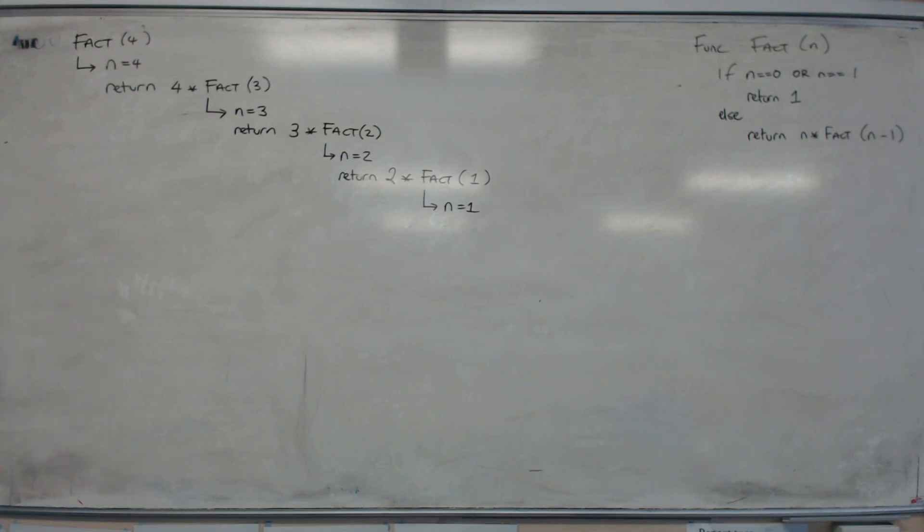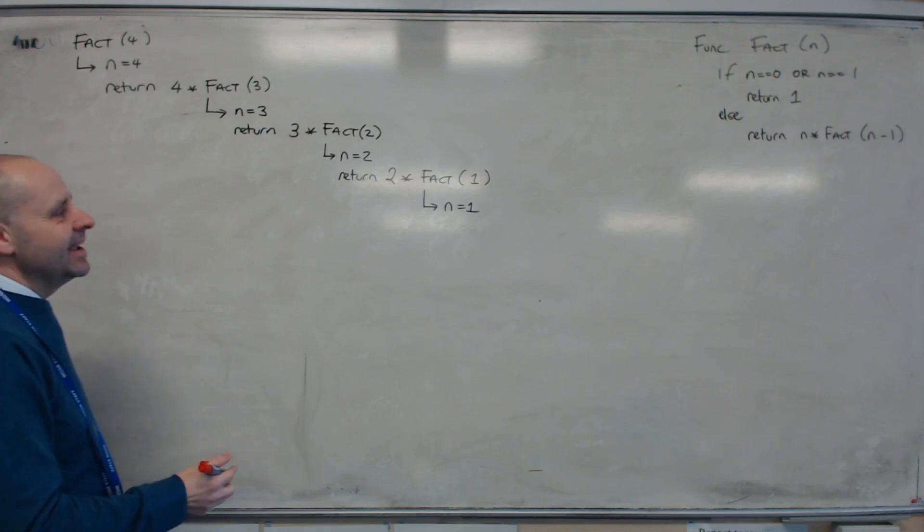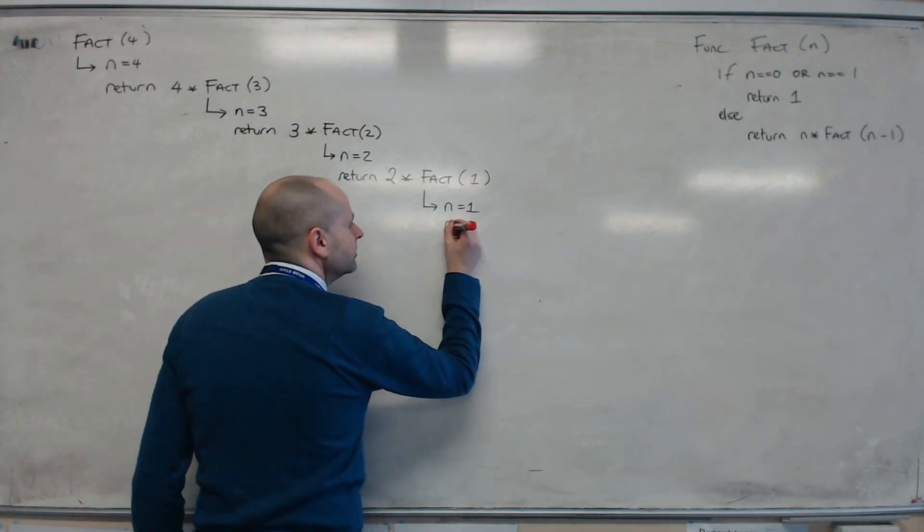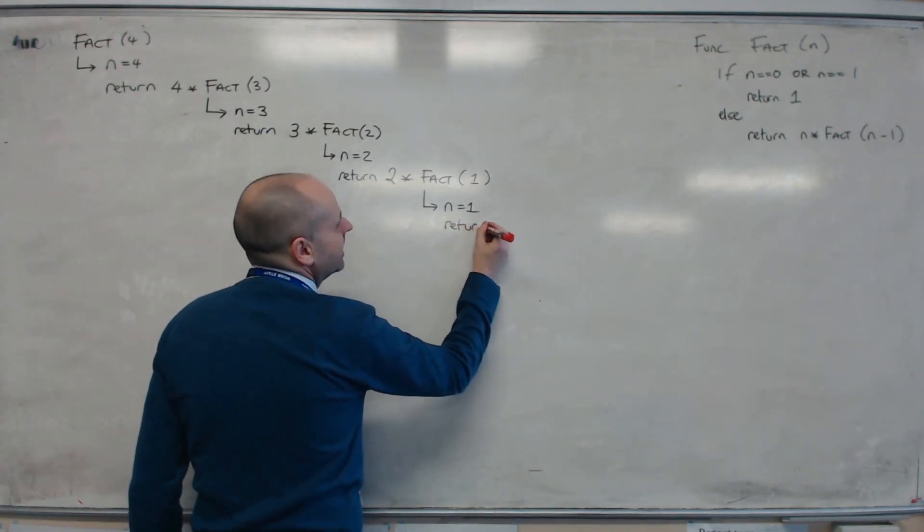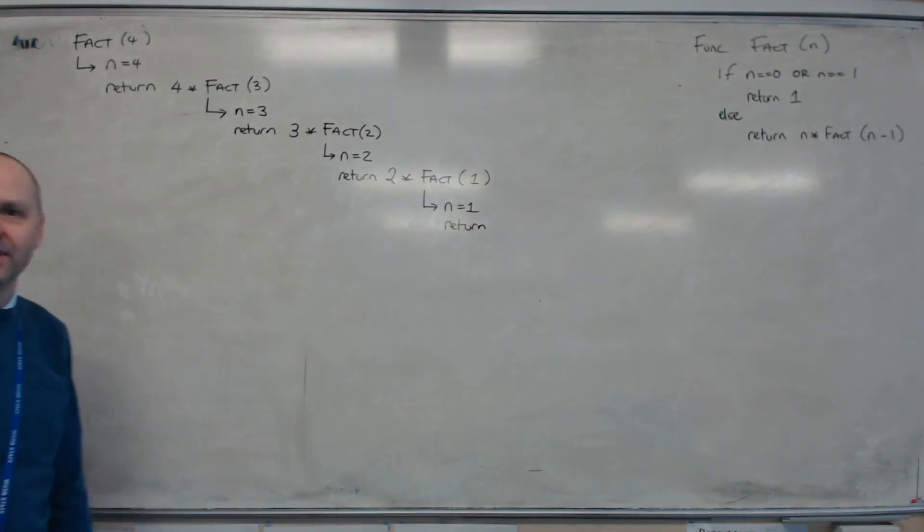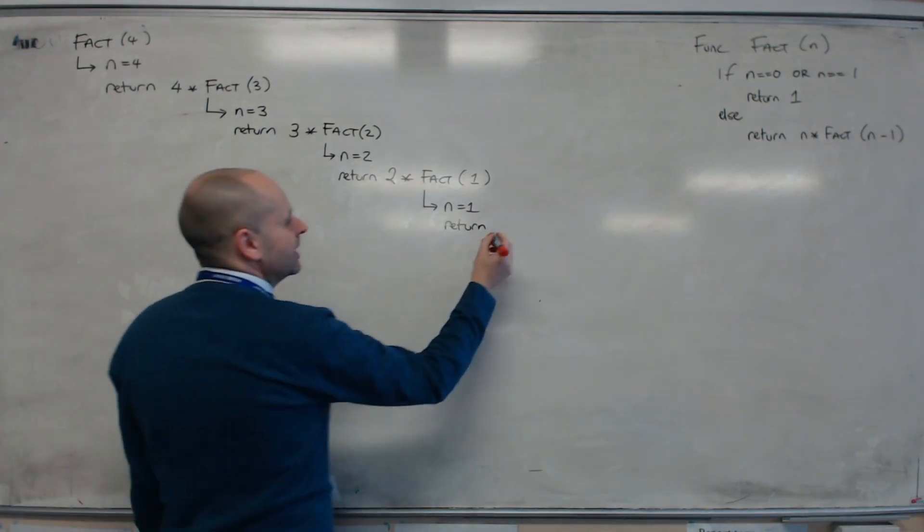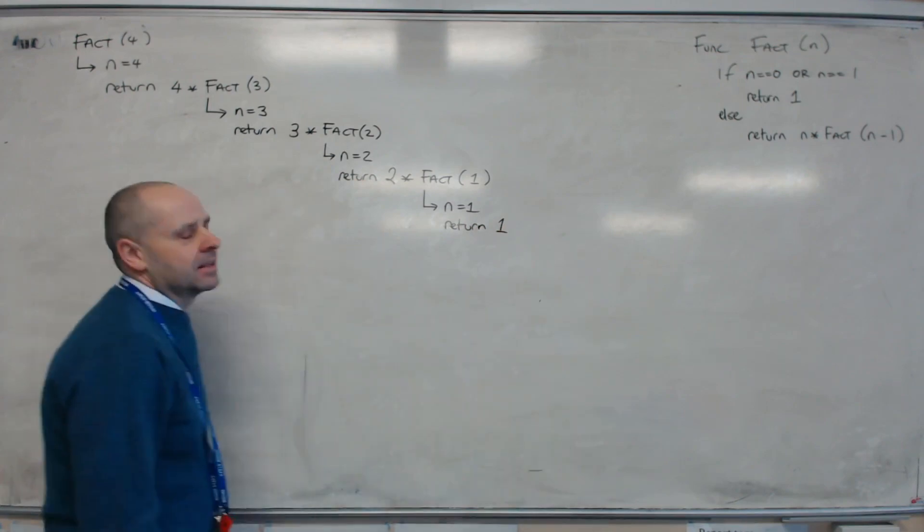Looking at that if this time though. If n equals 0. No, it's not that. Or n equals 1. So as long as one of those is true, we get a true. So we hit our return. So we finally get to the end of one of the functions. And we go, yes, we can get out of there. So we're going to say return 1. Now, this next step is crucial.